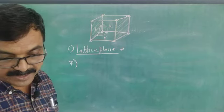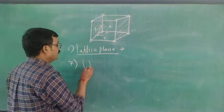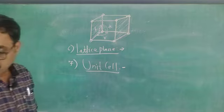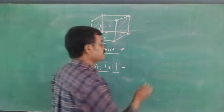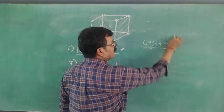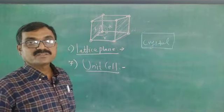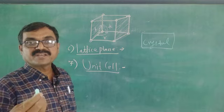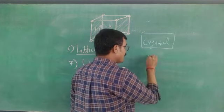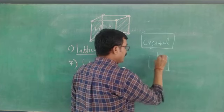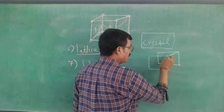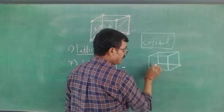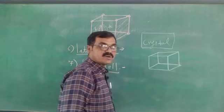The seventh and very important term is unit cell. Before defining it, you must know what a crystal is. A crystal is a naturally occurring solid which has flat faces, sharp edges, and definite interfacial angles. That is called a crystal.